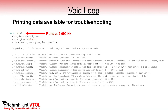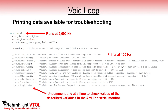At the top of the void loop you'll see some lines of code that pertain to the timing of the loop. Then there's a simple function used to blink the onboard LED to indicate that we are in the main loop. After that we get to a bunch of functions that can be used to print variable data to the Arduino serial monitor. Each of these prints at 100Hz and can be individually used to check values of the described variables for setup and troubleshooting.